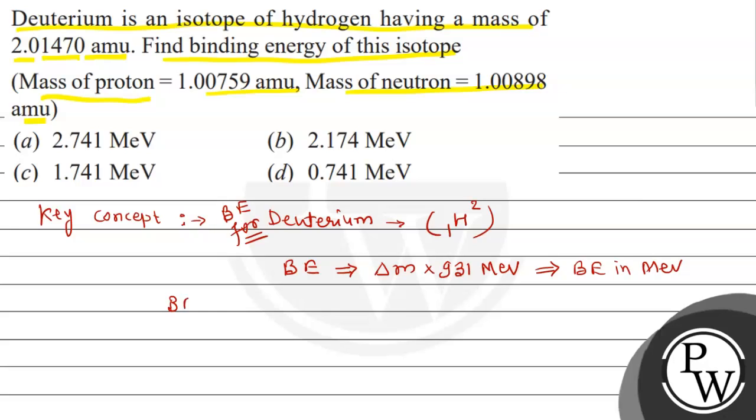Otherwise, the basic concept is that binding energy equals E equals del M into C squared. We can calculate binding energy using this also, but since options are in mega electron volt, we'll use the easier method. But first of all, we have to calculate del M.